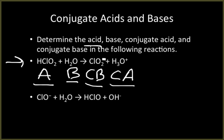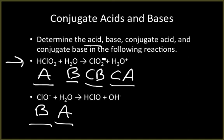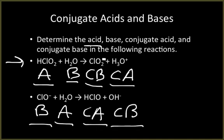In the second equation, H2O donates its hydrogen ion to ClO-, making H2O the acid and ClO- the base. Since HClO has accepted the hydrogen ion, it is the conjugate acid. Since OH- has already donated the hydrogen, it is the conjugate base. Just ask yourself which one donated and which one accepted the hydrogen.